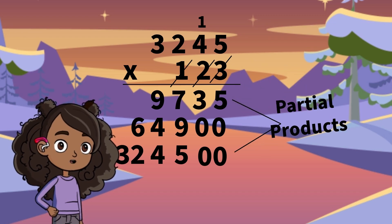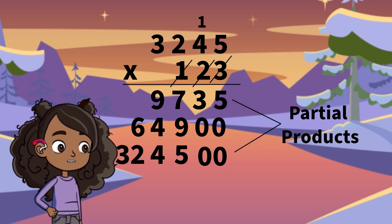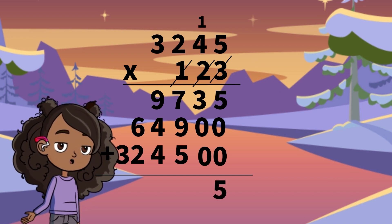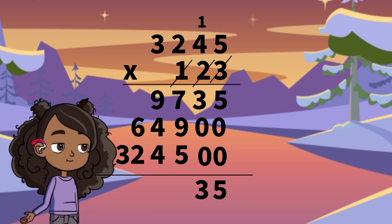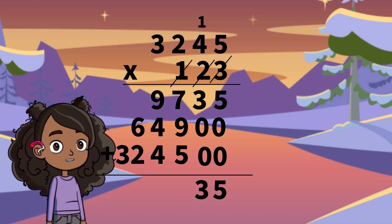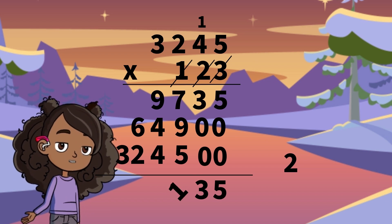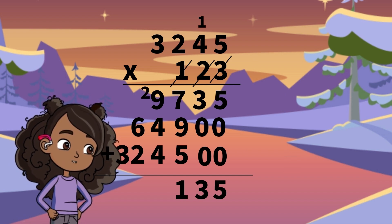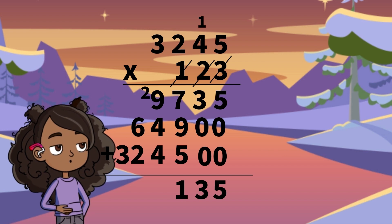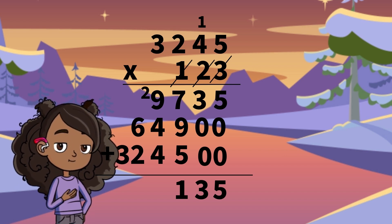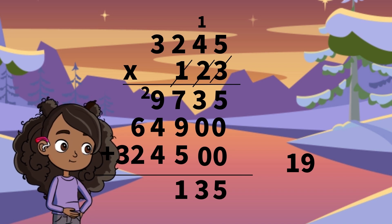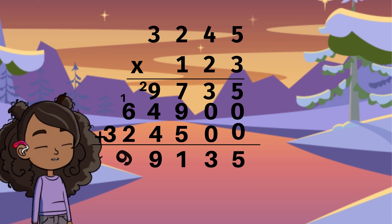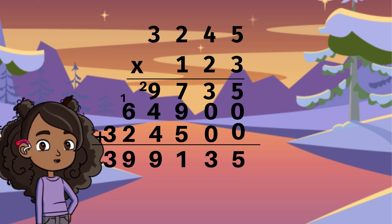These 3 rows are called partial products. Now let's add. 0 plus 0 plus 5 equals 5. 0 plus 0 plus 3 equals 3. 5 plus 9 plus 7 equals 21. Put down the 1 and carry over the 2. 9 plus 4 plus 4 equals 17, plus the 2 you carried over is 19. Put down the 9 and carry the 2. 2 plus 6 plus the 1 you carried over is 9. 3 plus 0 is 3.